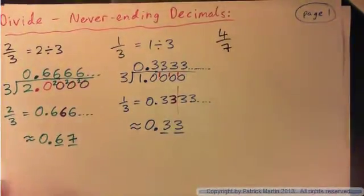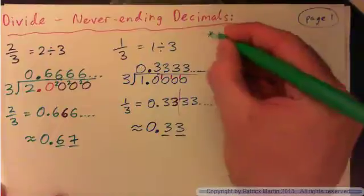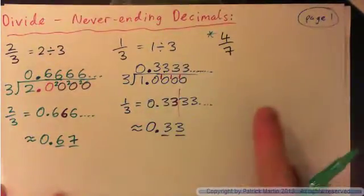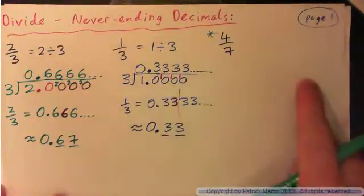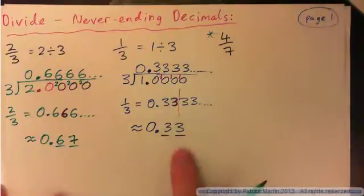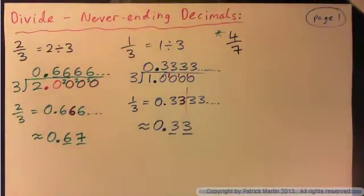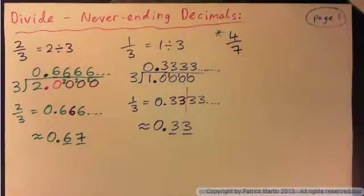Now please try 4 divided by 7 yourself. Do the division, then round it to the nearest hundredth. Press pause, do it all yourself. If you make a mistake, that's fine because you have the video to show you where you went wrong. I'm going to do it in a couple of seconds.